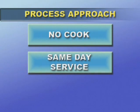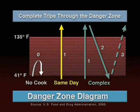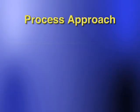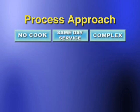The process approach categorizes menu items into three broad food preparation processes based on the number of times a food moves through the temperature danger zone. To begin developing a food safety program based on the process approach, sort your menu items into the appropriate process category.